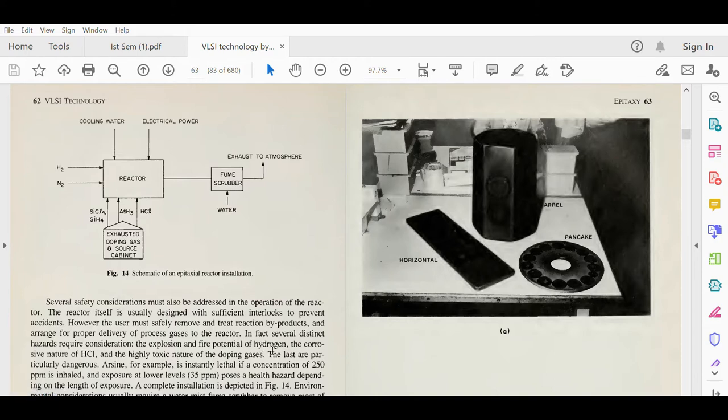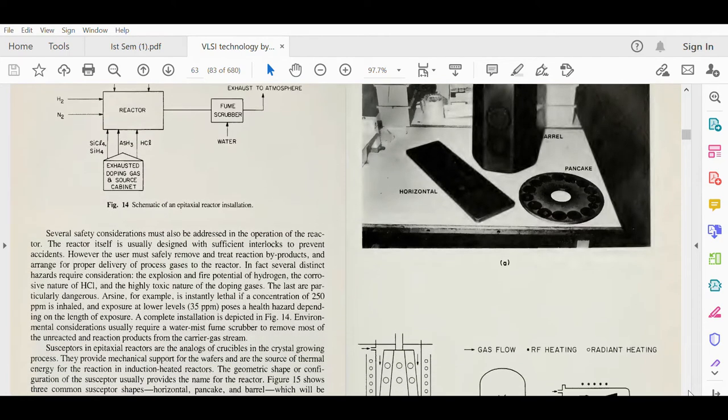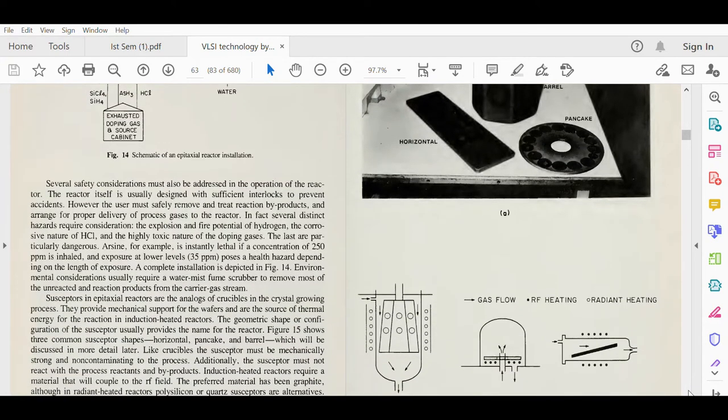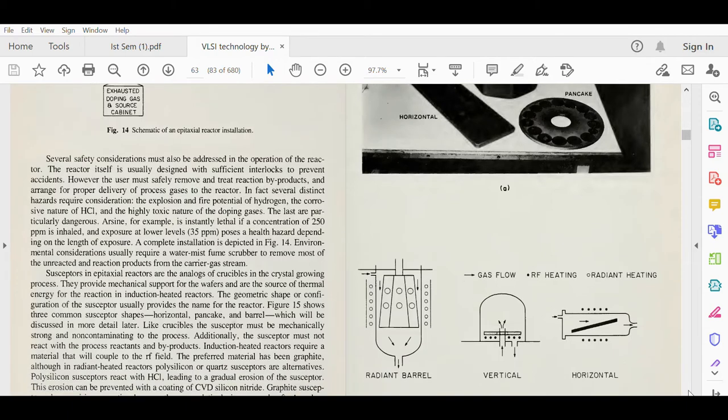The corrosive nature of the HCl and the highly toxic nature of the doping gases. We need to avoid the explosion nature of hydrogen, second is the corrosive nature of HCl, and third is the toxic nature of doping gases. All are disadvantageous and can make the process very hazardous.